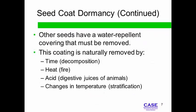Many forest plants employ seed coat dormancy. Forests tend to have a flush of new growth following a fire. Other areas see new growth following heavy rains or a seasonal temperature change. These are natural mechanisms for ensuring offspring will have the best growing conditions possible.